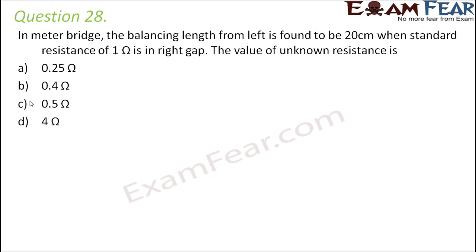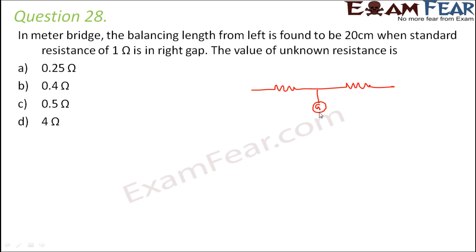Question number 28. In a meter bridge, the balancing length from left is found to be 20 cm when a standard resistance of 1 ohm is in the right gap. The value of unknown resistance is to be found. In a meter bridge, the arrangement has one resistance on the left gap, another resistance on the right gap, and a galvanometer. This is the length of the meter scale.